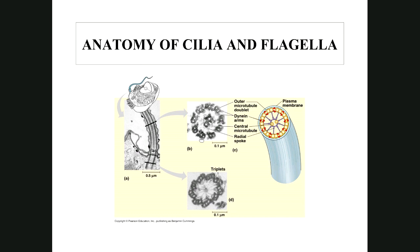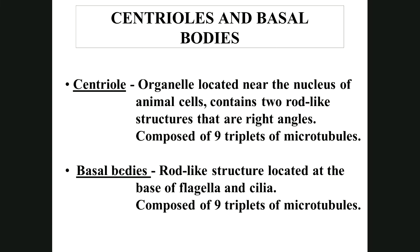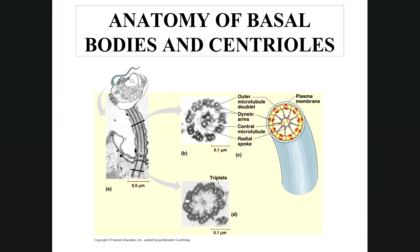Here's an electron micrograph showing the 9+2 arrangement — nine sets of two with two in the middle. Centrioles and basal bodies are also made of microtubules but in a different arrangement: nine triplets of microtubules (a 9+0 triplet arrangement). Centrioles are located near the nucleus of animal cells and are involved in cell division. Basal bodies anchor cilia and flagella into the cell membrane.